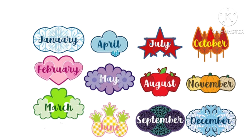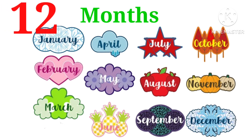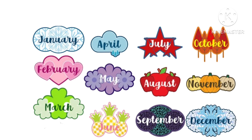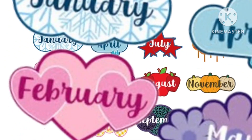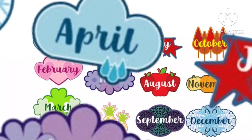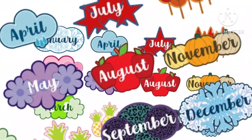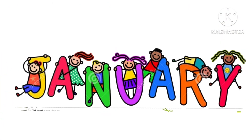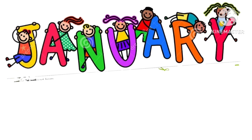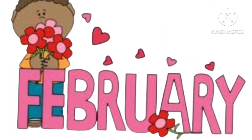January, February, March and April, May, June, July and August, September, October, November, December — these are the months of the year. Say January,